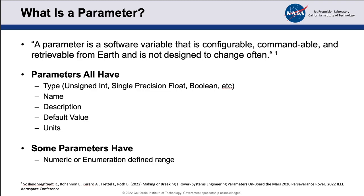All parameters have certain things. They have a type — that's a flight software type: unsigned int, float, boolean, etc. They'll have a name that defines how you address this thing both in the dictionary on the ground as well as in the code itself. A description that describes what this parameter does, what it impacts, what changing it might imply. A default value — that's the value the parameter would have the first time flight software comes out before you've changed anything. And finally, units — units are very important for parameters. Several missions have had problems and several have been lost due to parameter units, so that's something we enforce all parameters having, and those are checked properly during our development process.